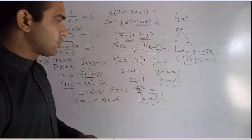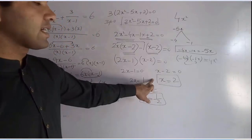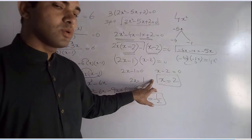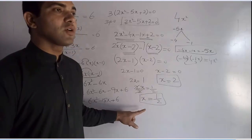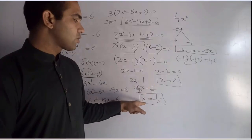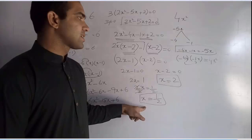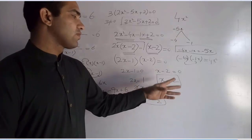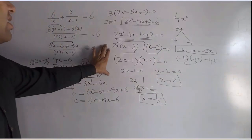These are the two possible values of x: x is equal to 2 and x is equal to 1 over 2. Either of them can be taken for further application of this equation.